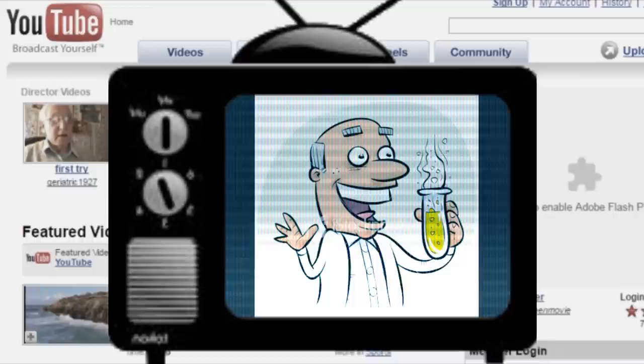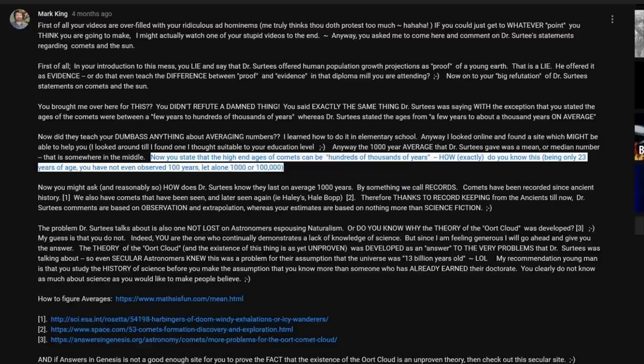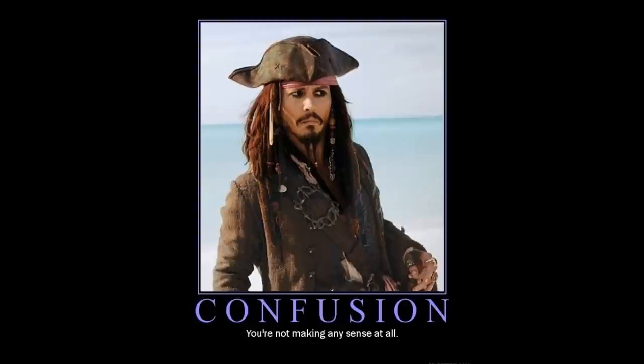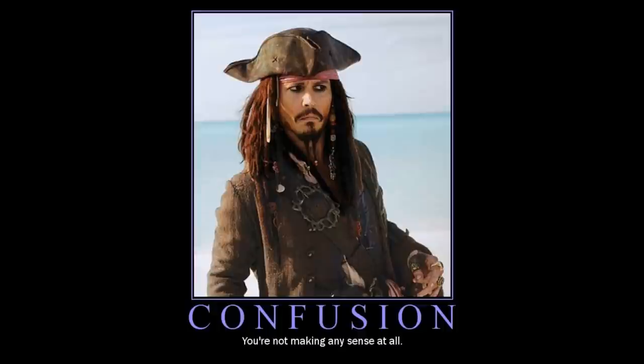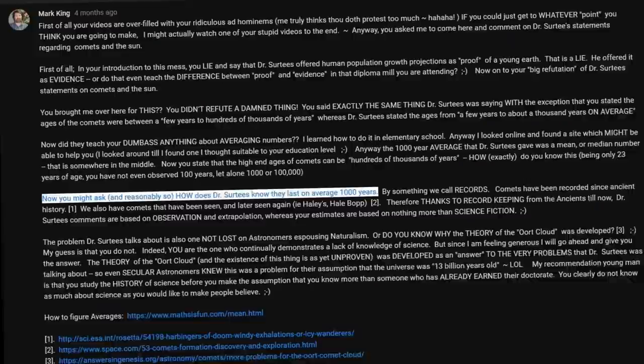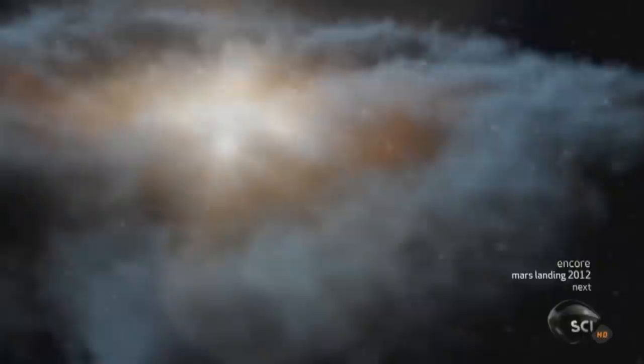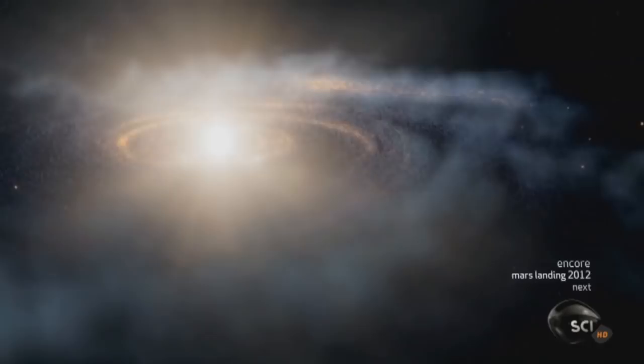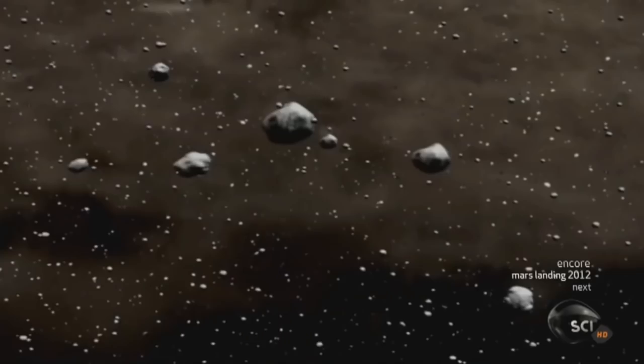Now, you state the high-end ages of comets can be hundreds of thousands of years. How exactly do you know this? Being only twenty-three years of age, you have not even observed one hundred years, let alone a thousand or one hundred thousand. What? You think I cannot possibly know about something unless I was personally alive to witness it? Well, then I might ask- Now you might ask, and reasonably so, how does Dr. Surtees know they last on average one thousand years? Oh, yes, I would. Especially since the comets were formed at the beginning of the solar system five billion years ago. But I assume he starts the clock when they are first documented as having entered into the inner solar system.